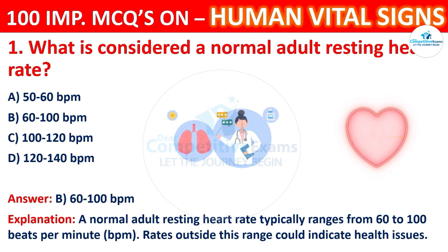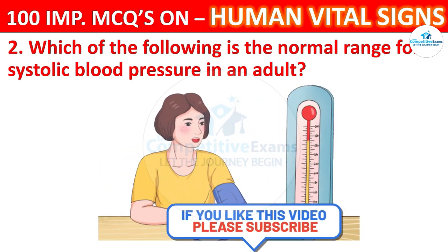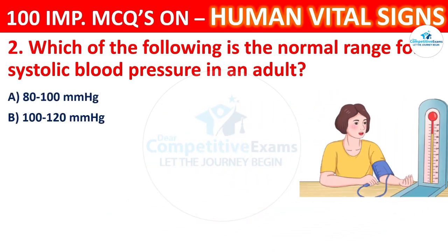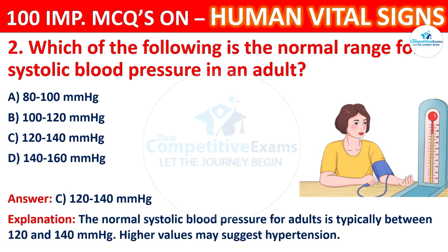Question 2: Which of the following is the normal range for systolic blood pressure in an adult? Options: 80 to 100 mmHg, 100 to 120 mmHg, 120 to 140 mmHg, or 140 to 160 mmHg. The correct answer is C, 120 to 140 mmHg. The normal systolic blood pressure for adults is typically between 120 to 140 mmHg; higher values may suggest hypertension.